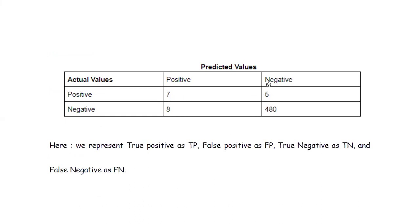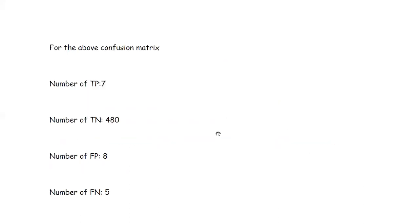So to be clear: the machine predicted 5 as negative, but actually they are positive — so that is false negative. Similarly, the machine predicted 8 as positive, but they are not actually positive — they are negative in actual value — so that is false positive, with a value of 8.